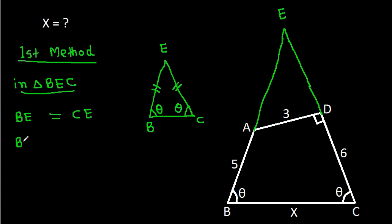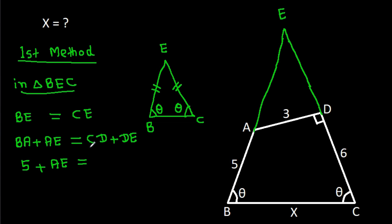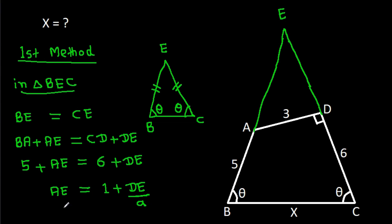BE is BA plus AE, which equals CE which is CD plus DE. So 5 plus AE equals 6 plus DE, meaning AE equals 1 plus DE. If DE is A, then AE will be 1 plus A.